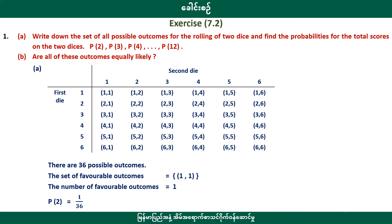Write down the set of possible outcomes for rolling two dice. Find the probability for the two dice: probability of 1, probability of 2, probability of 3, probability of 4, and so on, probability of 12.